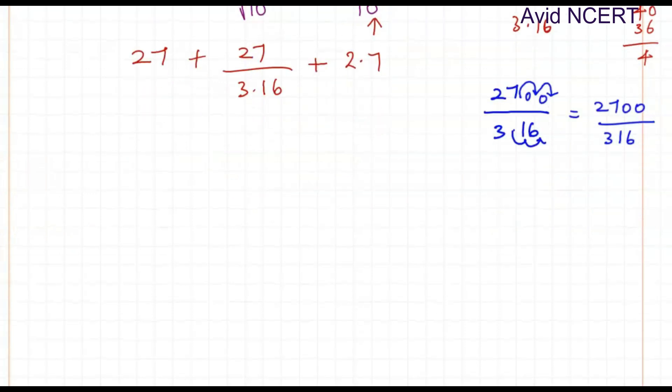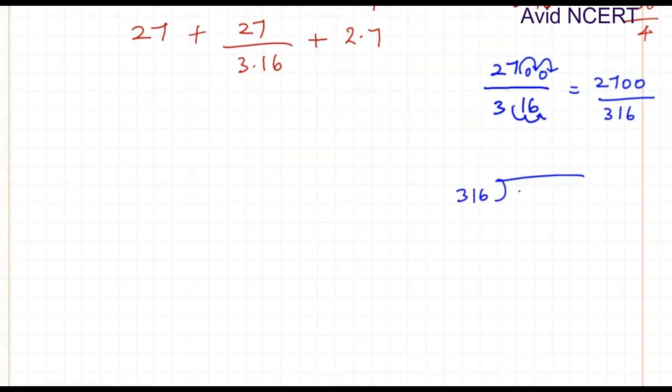So doing the normal regular division. So 316 into 2700. Around 8 times which is 2528. And the difference is 271. So place a decimal point. Add a 0 here. So 1720 which is 5 times around 1580. So the difference is again 441. So add a 0 again. Which is around 4 times which is 1264. So the difference is 136. So we can stop for about 2 decimal places.